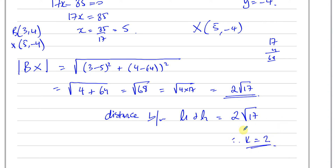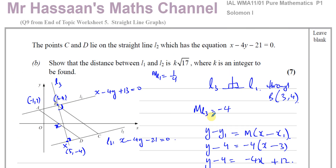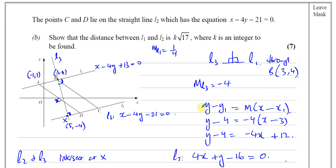So that's the answer to part B. To summarise: the distance between two lines is the perpendicular distance. We found the perpendicular line to line 1 passing through B, found where that perpendicular line intersects line 2 — that's point X — and then used the length formula to find the distance BX, which is the distance between the two parallel lines.